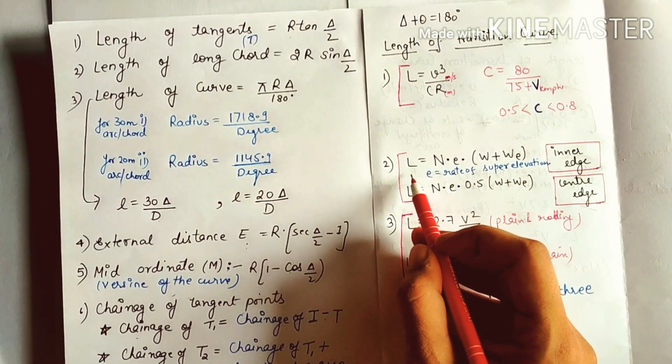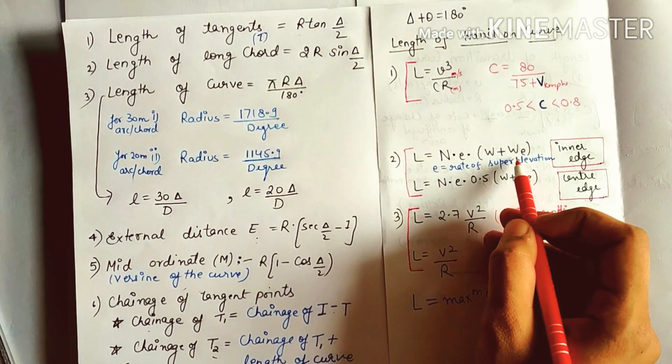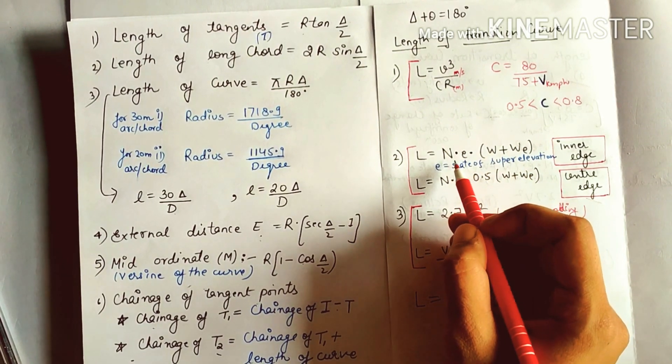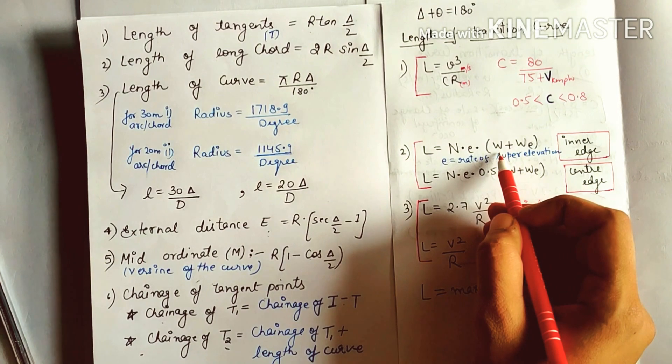Next formula: L = N × E × (W + We), where We is extra widening, N is the gradient, E is rate of super elevation, and W is the width of the road.